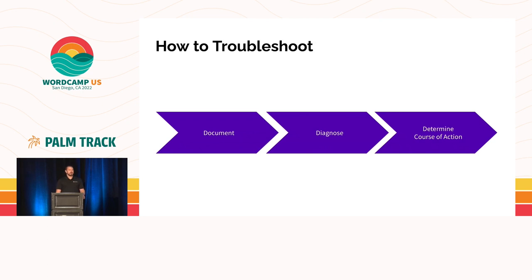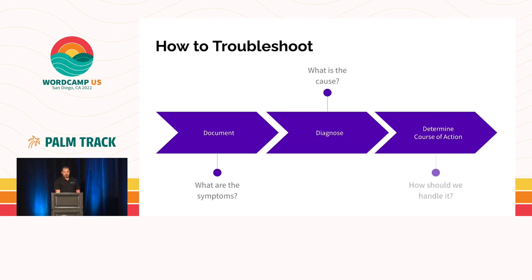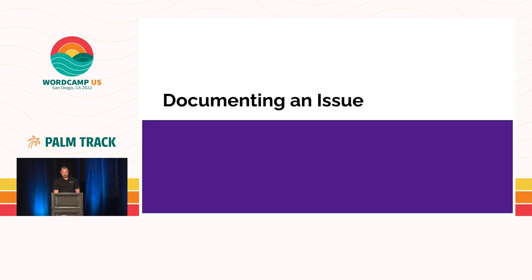As with any problem, the first thing you want to do is document what the problem is — what are the symptoms you're seeing, what's actually happening or not happening. We want to end up at some sort of diagnosis: what is the actual cause, the root issue. And then we have to figure out what we're going to do about it — how are we going to handle that situation. The meat of it is going to be the diagnosis because that's where it can be kind of difficult to figure out if you're not familiar, so we'll spend a lot of time on that.